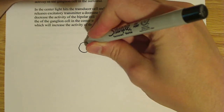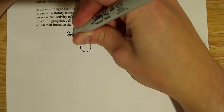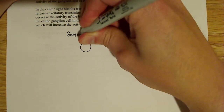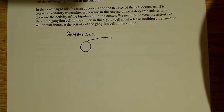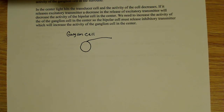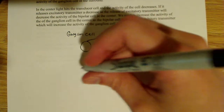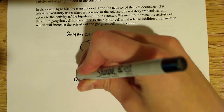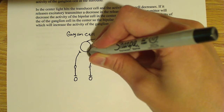The first thing I do — this doesn't have to be beautiful — I draw here what is a ganglion cell. So there is a ganglion cell right there. The next thing I do is I basically just draw my transducers, bipolar cells, and I kind of show how this is going to look. I'll explain as I go along what's going on here and why these things are the way they are.